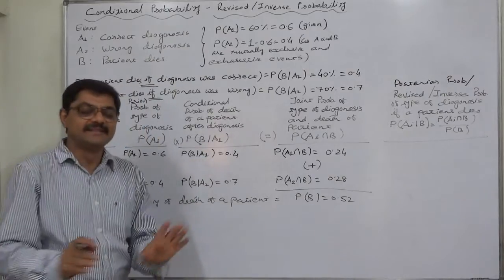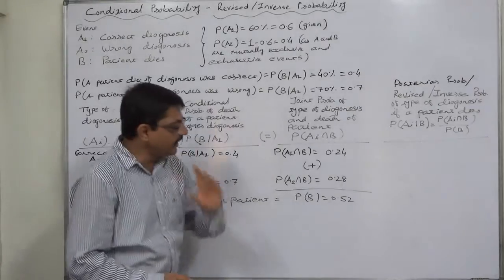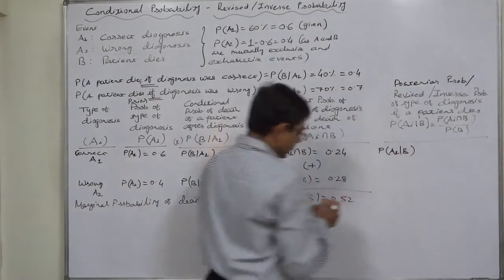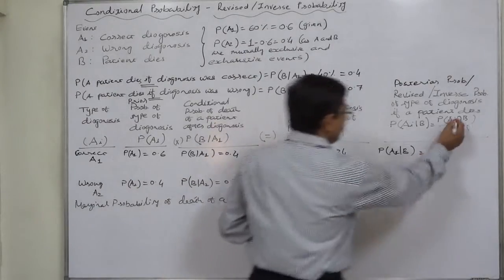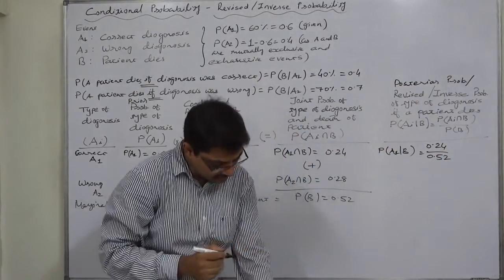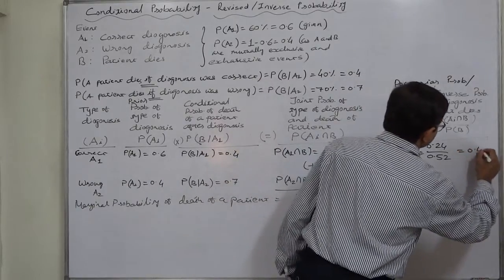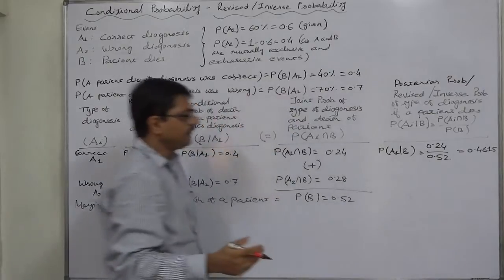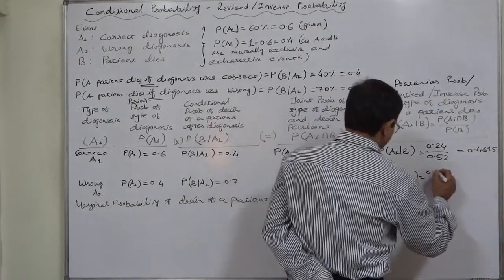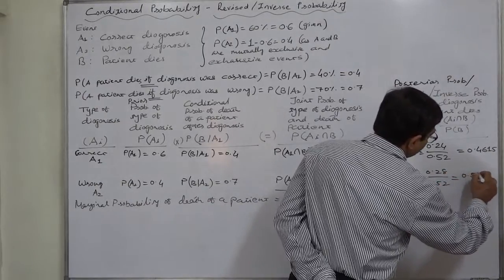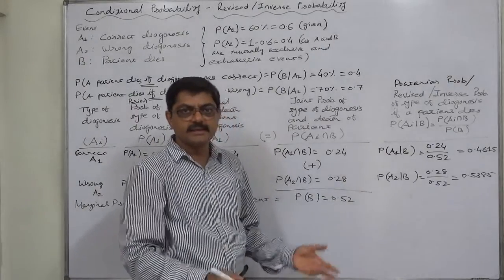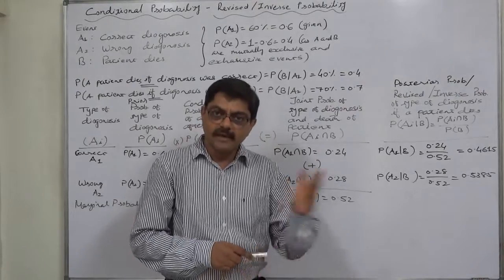This is a very high probability of a patient dying after treatment from this doctor, but this is an imaginary problem. Now, given that a patient died, the probability that the diagnosis was correct: P(A1 given B) = P(A1 ∩ B) / P(B) = 0.24 / 0.52 ≈ 0.4615. Similarly, P(A2 given B) = 0.28 / 0.52 ≈ 0.5385. These two posterior probabilities sum to one, as either the diagnosis was correct or wrong when the patient died.